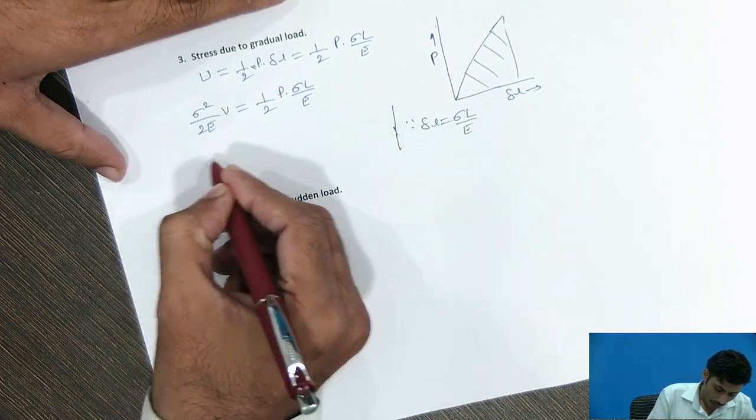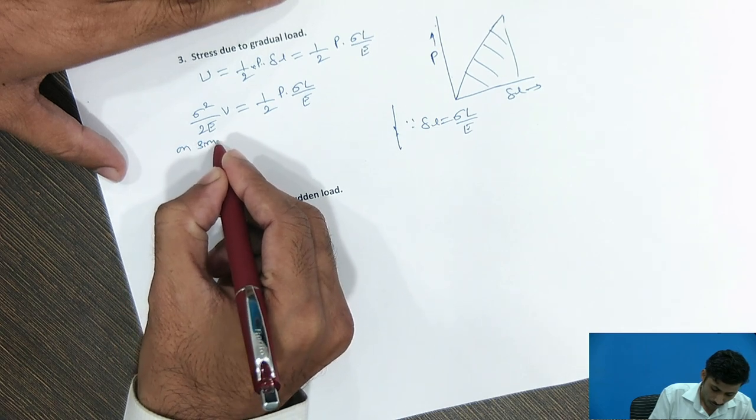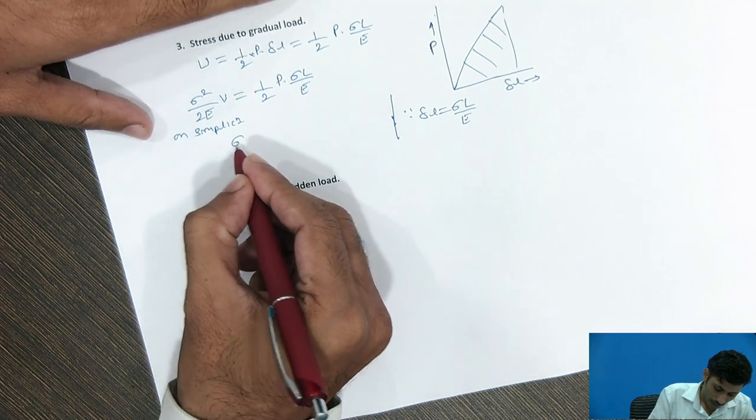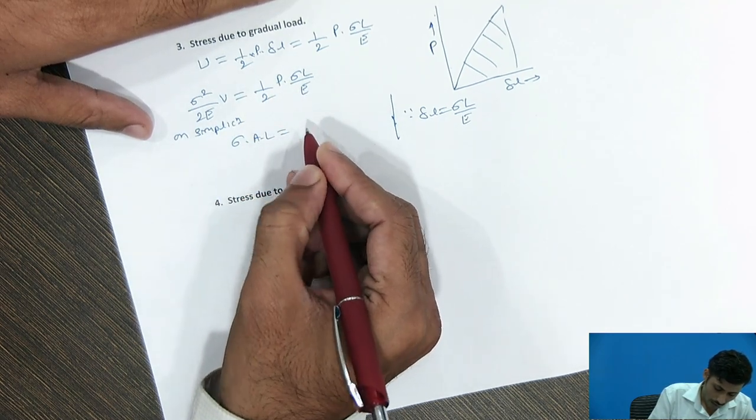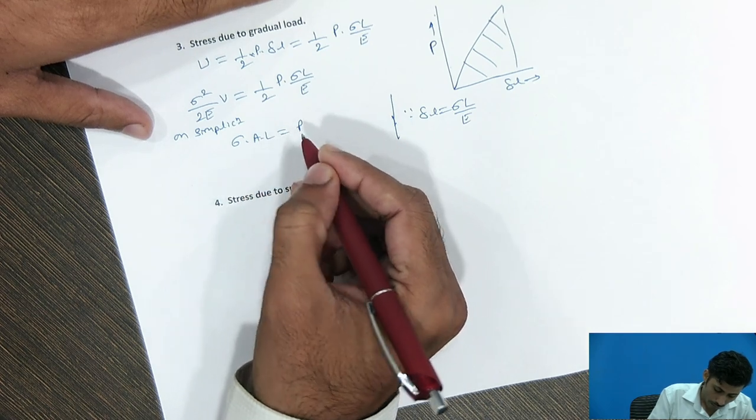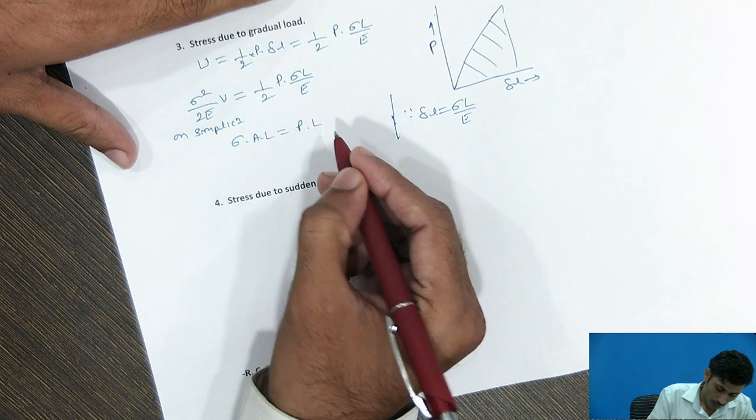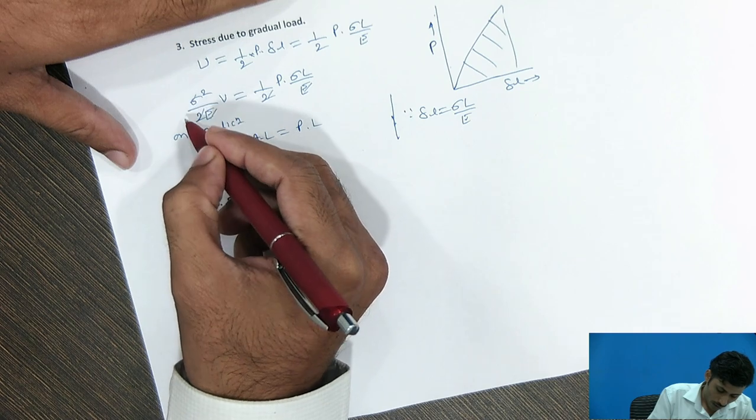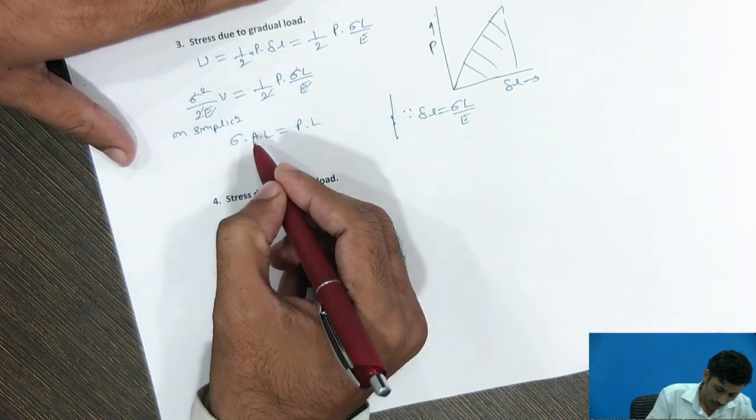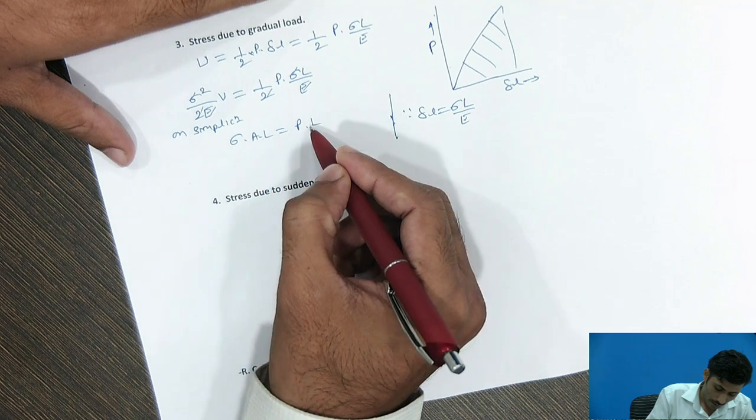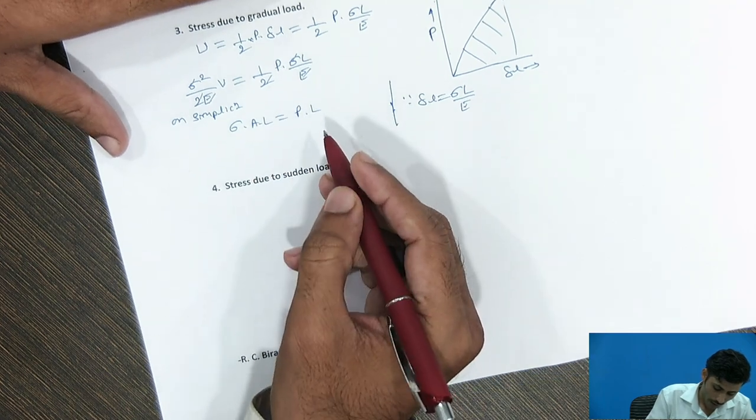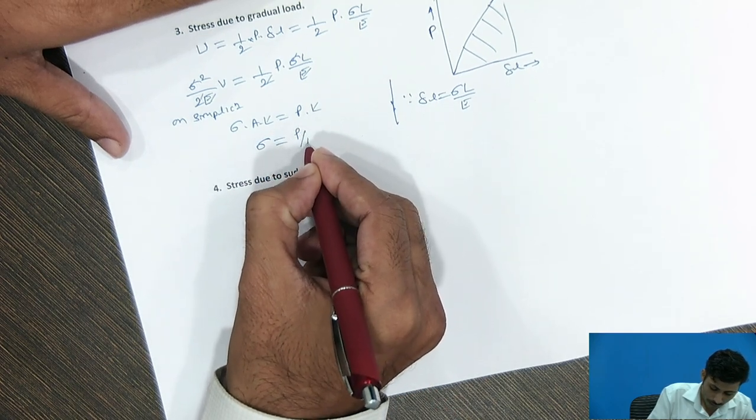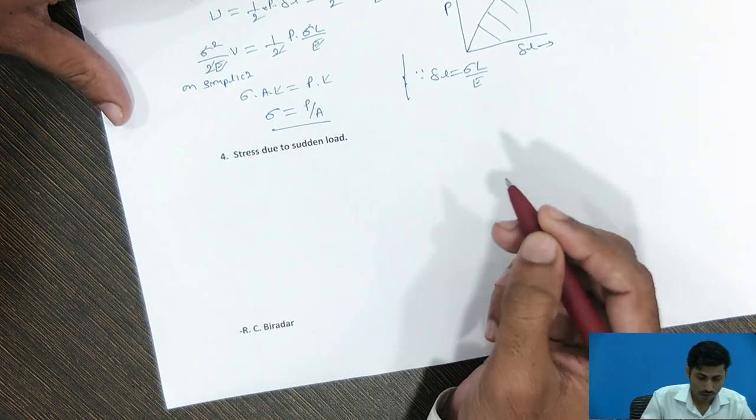Now, on simplification, so I can get sigma into A into L equal to what? P term will be remaining here into L. Because this term, this term and this term get cancelled. And one sigma here and one sigma get cancelled. Only remaining is sigma into volume that is A into L. And this side is P into L is remaining. Again LL get cancels here. So, remaining is what? P by A term as a sigma value for gradual load.